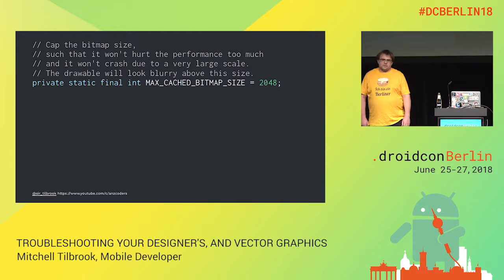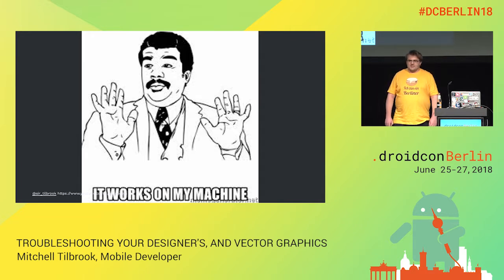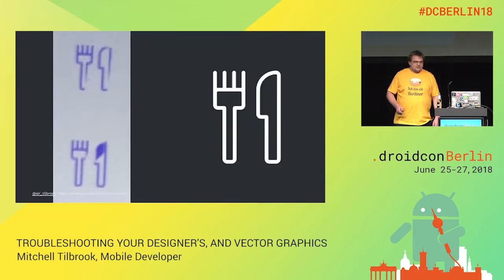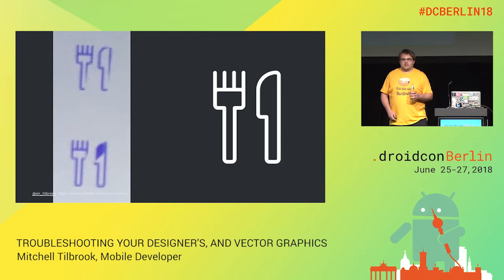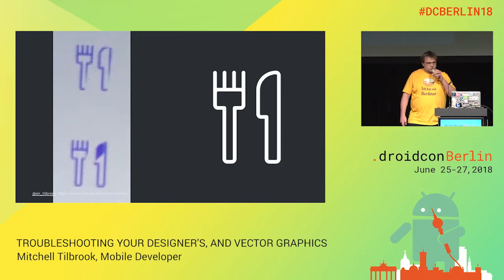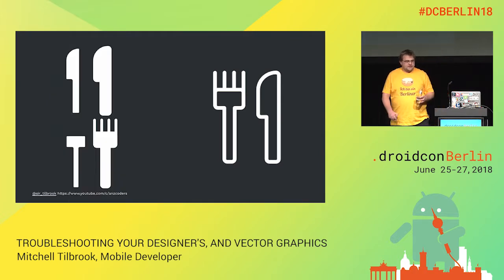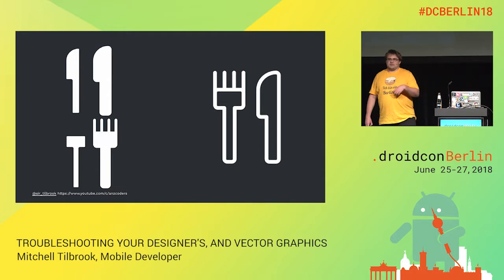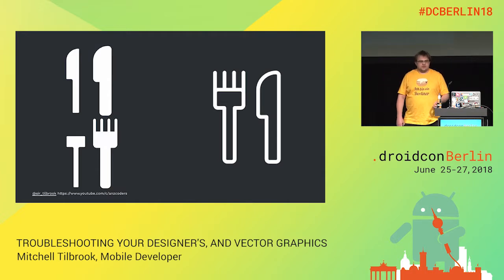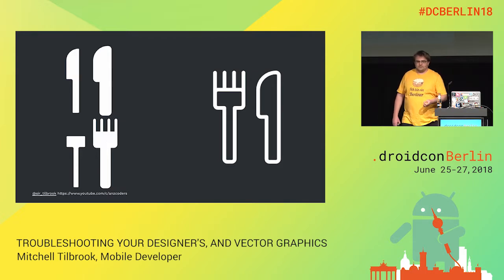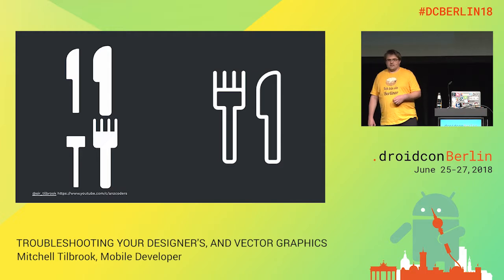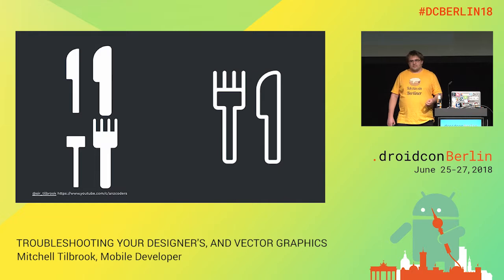But vector drawables don't always work. Very often in Android, we run into this problem where it works on my machine or my device. This is a bug report we got from one of our images — the image on the right is what it should look like, and the image on the left is what we're actually seeing on, I believe, a KitKat device. This goes back to how your designers might be drawing the images. Our image was optimized, but we optimized it from a composite shape — we took knife icons and fork icons, composed them, and cut them out from one another. This can cause problems on some of the older devices even using the support vector drawables.